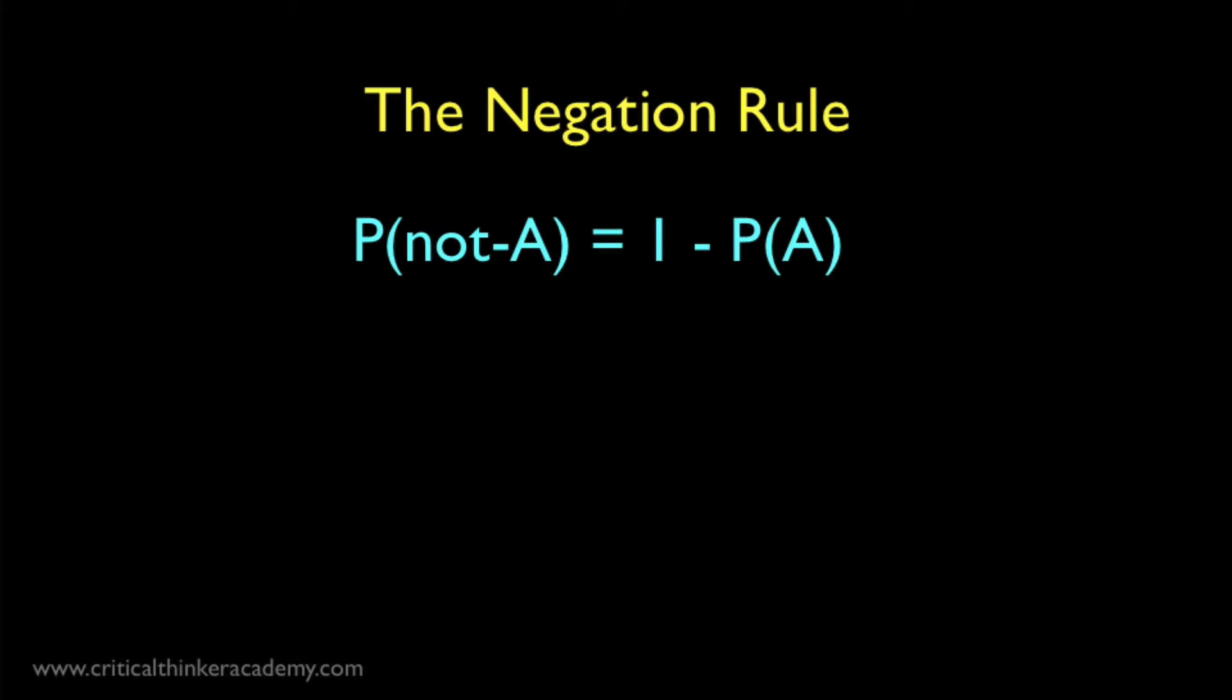The rule is simple. Given P of A, the probability that A will occur or that A is true, the probability of A not occurring, or not being true, is equal to 1 minus the probability of A. Here's a simple example.